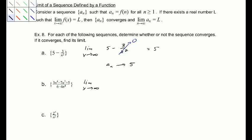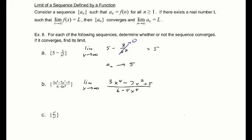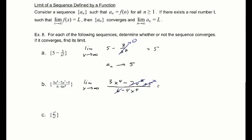Next, take the limit as x goes to infinity of (3x⁴ minus 7x² plus 5) over (6 minus 4x⁴). We can use L'Hôpital's rule since this is continuous and both terms go to infinity, or we can use the Calculus 1 idea that lower-order terms are negligible. In the long run, all that matters is 3x⁴ over negative 4x⁴, which is negative 3/4. So a_n approaches negative 3/4.